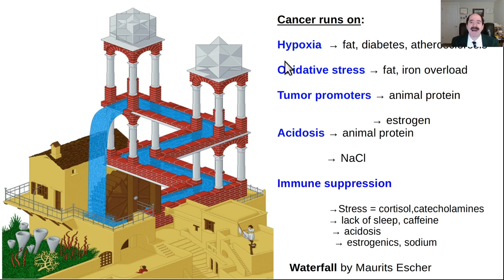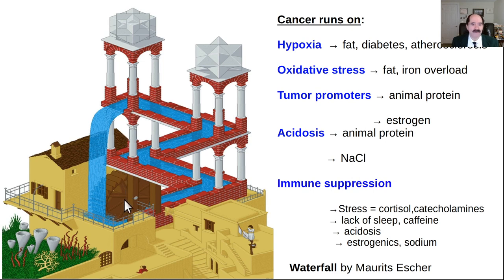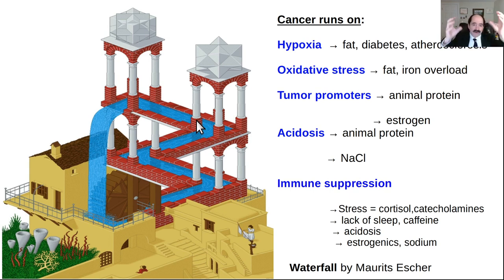Cancer runs on hypoxia - that's an important point. Look at this picture here - a waterfall by M.C. Escher. The water falls down the waterfall, but somehow the mill wheel turns and makes the water come back up and it falls again. The point is you're in an endless circle. When you read articles about cancer, you'll see all these cascades of negative events that reinforce themselves. It's a vicious cycle - it just gets worse and worse. Cancer grows, metastasizes, spreads, kills the patient.